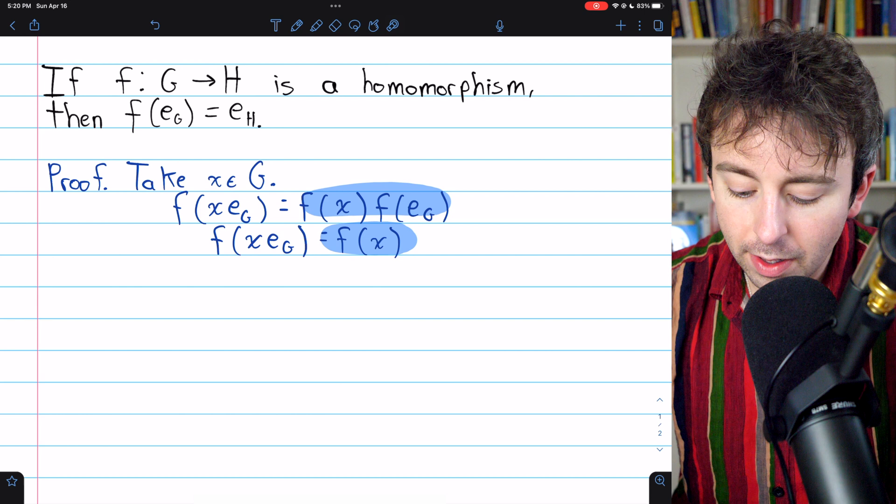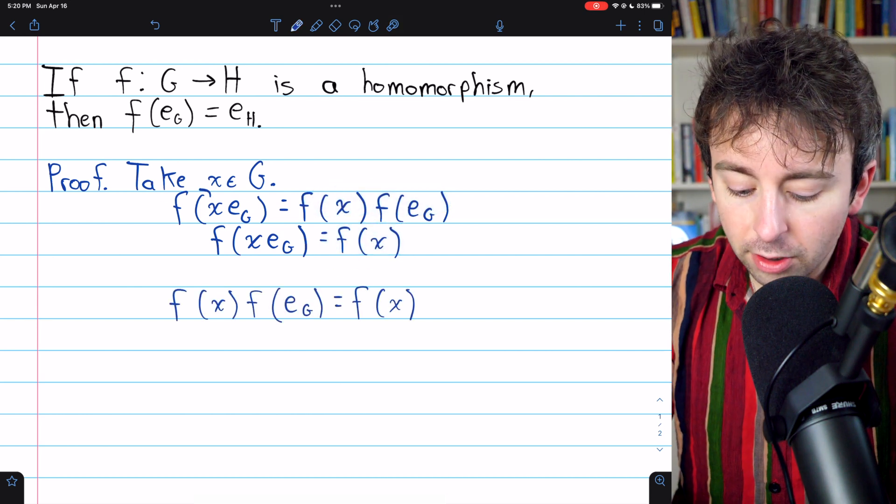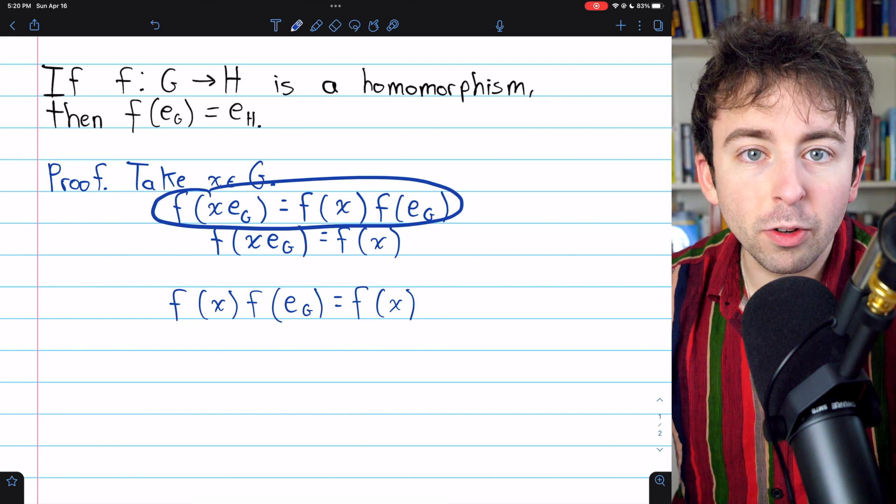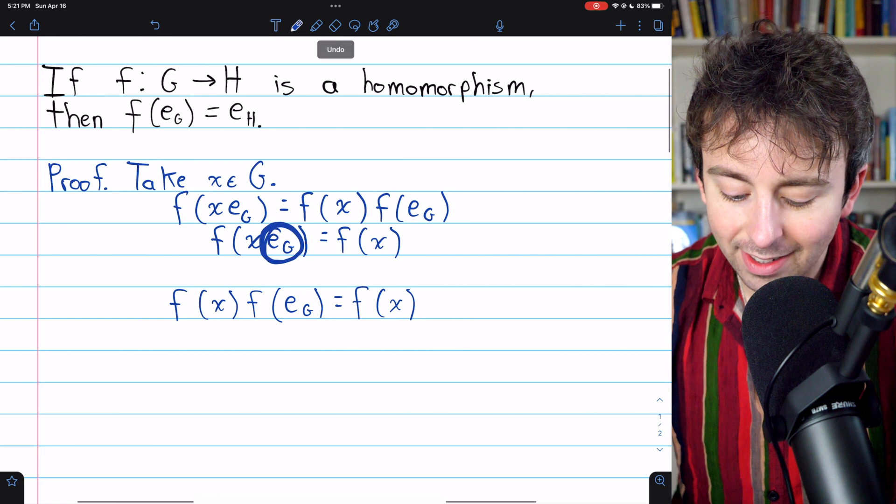f of x f of e_G is equal to f of x. Again, the first equation just follows by definition of a homomorphism, and the second equation follows by definition of identity.